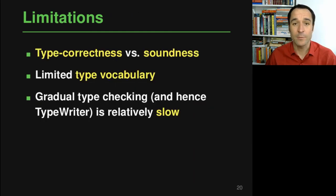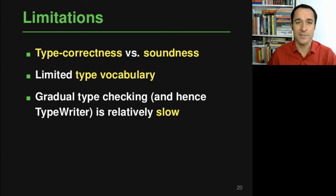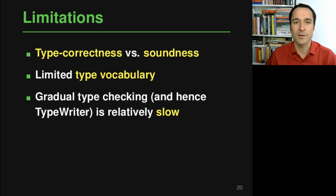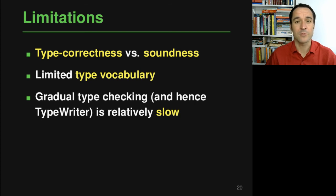There are some limitations future work could address. First, type correctness does not equal soundness — a type-correct type may not be the one a developer actually wants, since multiple type-correct options may exist. Second, TypeWriter uses a fixed type vocabulary, so rare types cannot be predicted. Finally, TypeWriter relies on an existing gradual type checker which is not particularly fast, so tighter integration with type checking could yield a faster overall approach.